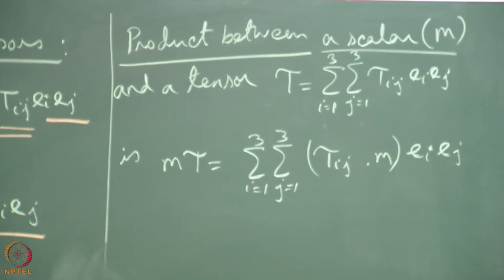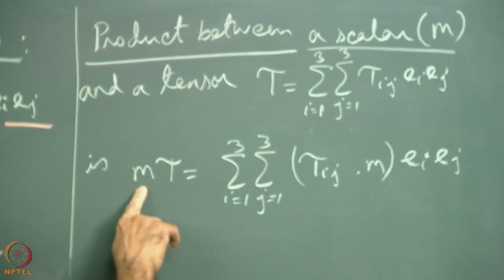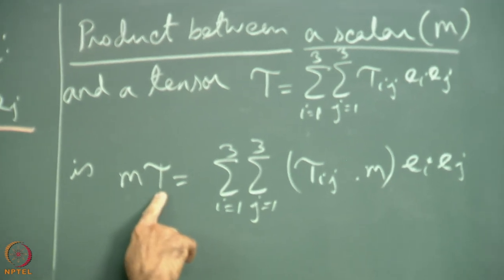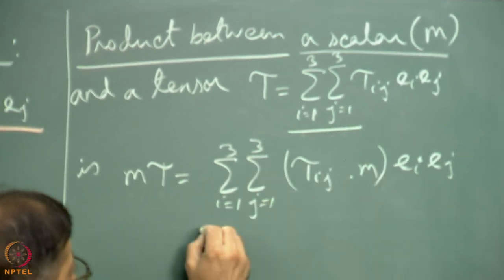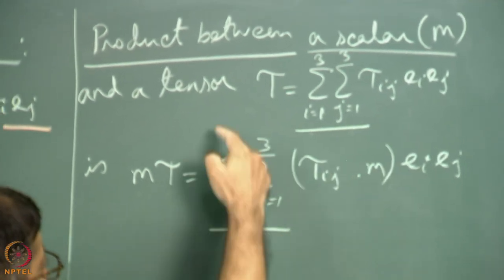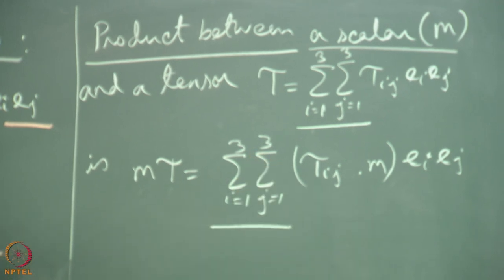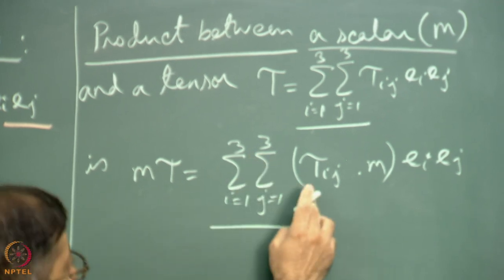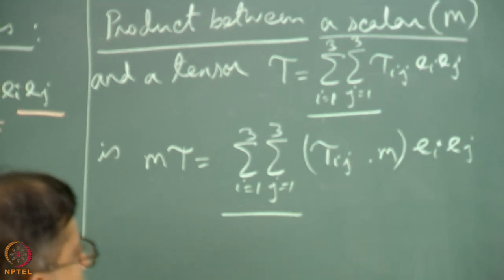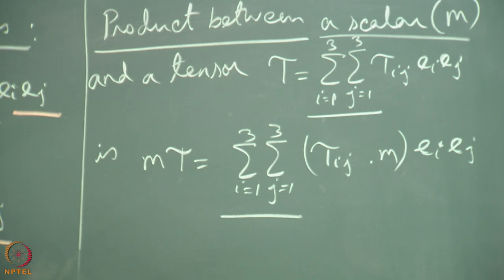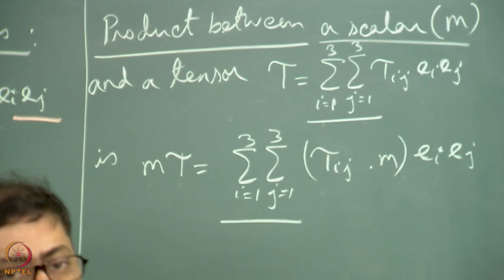How does the multiplication work? We write m·tau as the same double summation over i and j from 1 to 3, but for each term tau_ij is multiplied by m, and then we write e_i e_j.